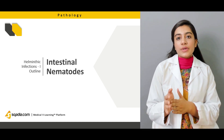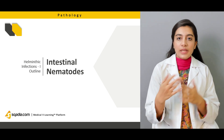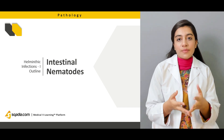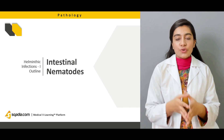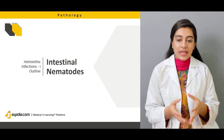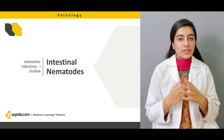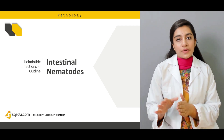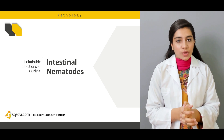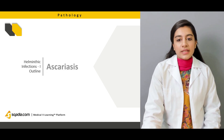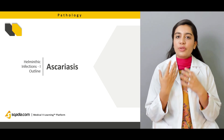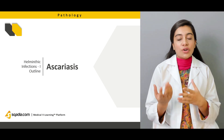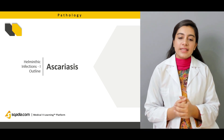That concludes the filarial nematodes section. We will then move on to intestinal nematodes, which, as the name suggests, target the intestines. There are many different organisms, genera, and phyla involved. We will discuss ascariasis, covering its pathology, pathophysiology, morphology, characteristics, etiology, epidemiology, and clinical signs and symptoms.